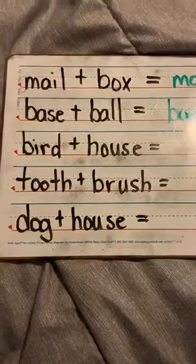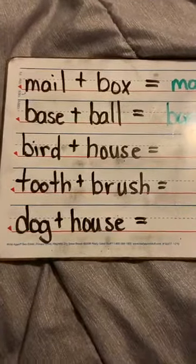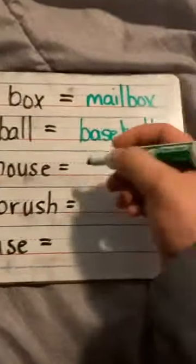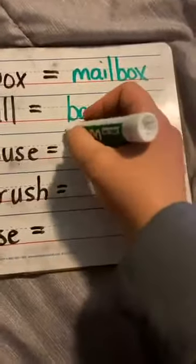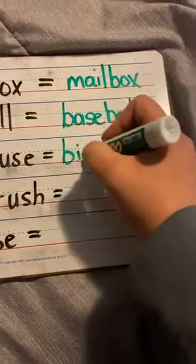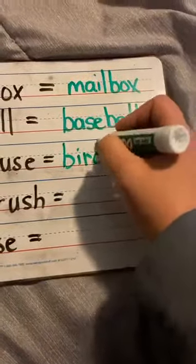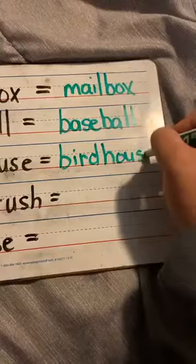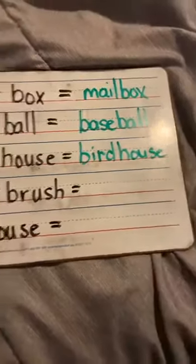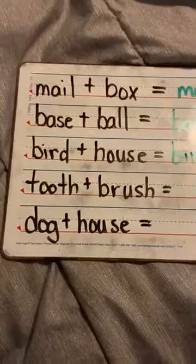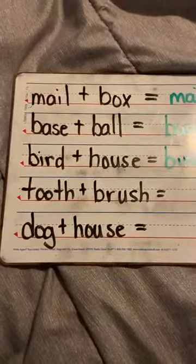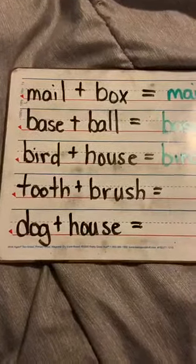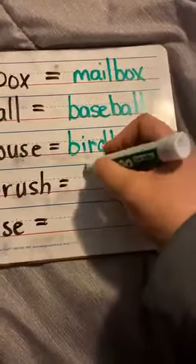Next one, I have bird plus house. What do you get? You put them together, you get birdhouse. Very good. Now let's go to the next one. I have tooth and I have brush. I put those two words together and I get the word toothbrush. Very good.